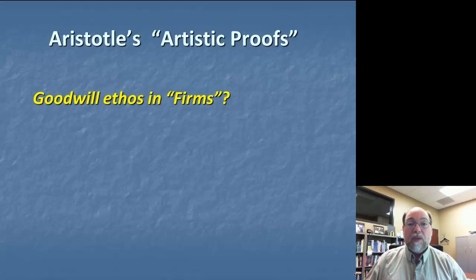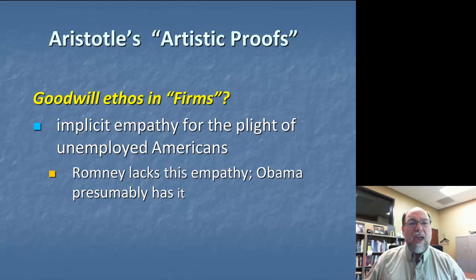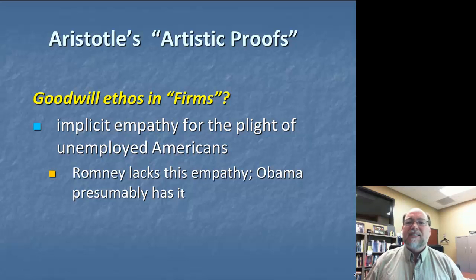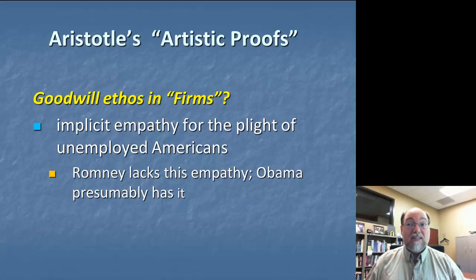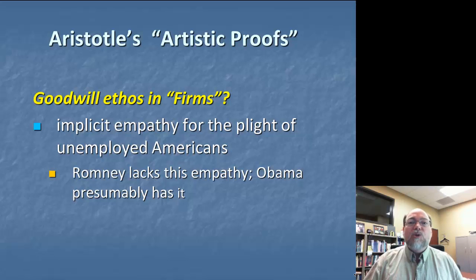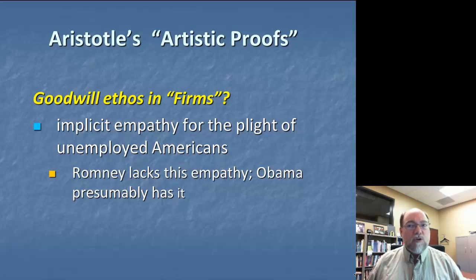The final area of ethos is goodwill. What examples do you find that suggest Obama is trying to convey a sense of goodwill for his audience? The ad really presents an implicit empathy for the plight of unemployed Americans. The notion is that Romney just does not have empathy for the needs of the American economy and the American worker, and by contrast, Obama presumably has it because he's attacking Romney on these grounds. As you can tell from these latter two elements of ethos, the notion of appeal to the speaker's credibility in terms of values can be very closely connected to appeals to audiences' emotions and feelings, but we want to make sure we keep those two aspects of the analysis distinct.